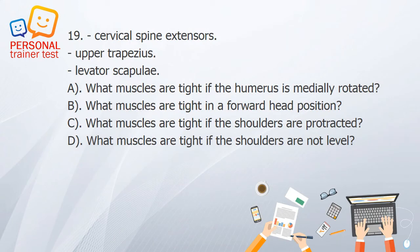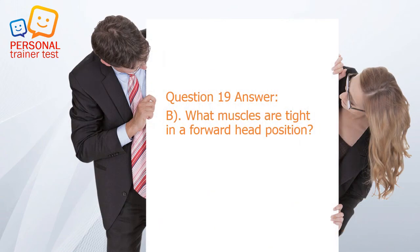Question 19. A. What muscles are tight if the humerus is medially rotated? B. What muscles are tight in a forward head position? C. What muscles are tight if the shoulders are protracted? D. What muscles are tight if the shoulders are not level? Answer: B. Cervical spine extensors, upper trapezius, and levator scapulae are tight in a forward head position.